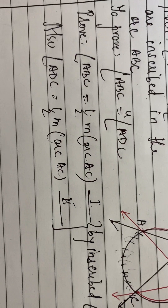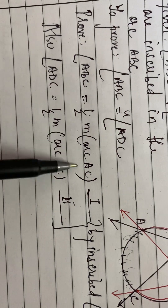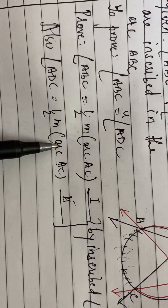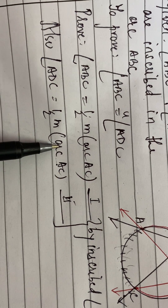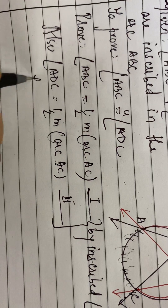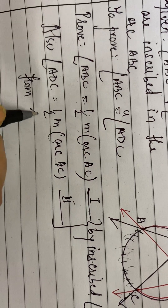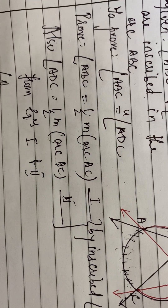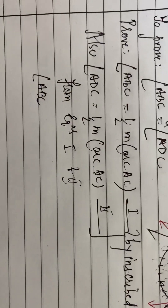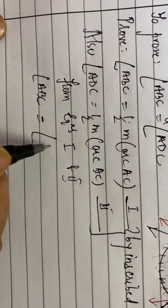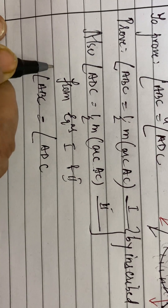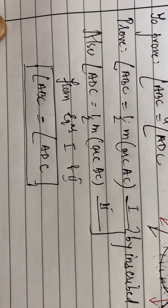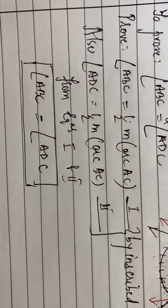Now, if you look at these two equations, you will find that the right-hand side of the two equations are the same. If the right-hand side is the same, then the left-hand side should be the same. So from equations 1 and 2, angle A, B, C is equal to angle A, D, C. This is what we had to prove — angles inscribed in the same arc are congruent.